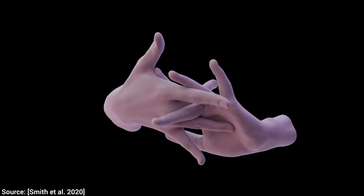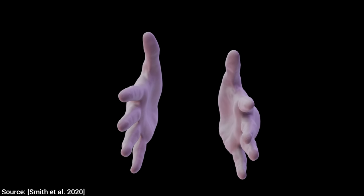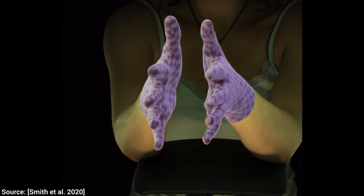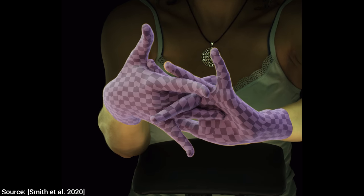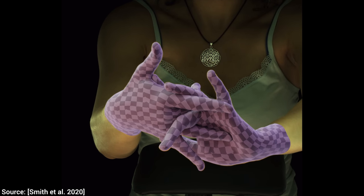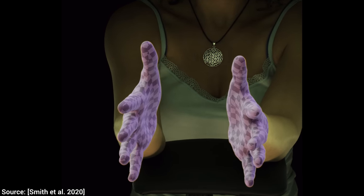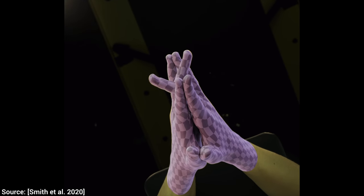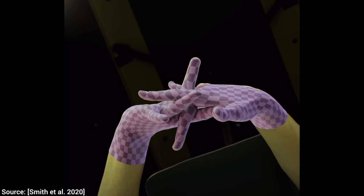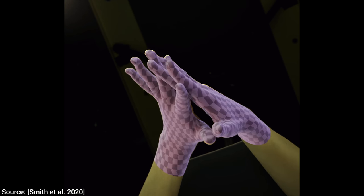Let's go in guns blazing and give it examples with challenging hand-hand interactions, deformations, lots of self-contact and self-occlusion. Take a look at this footage. This seems like a nightmare for any hand reconstruction algorithm, who the heck can solve this?